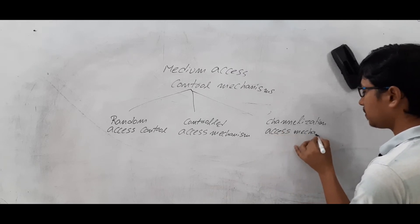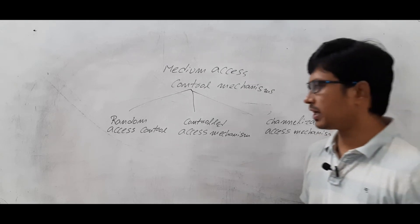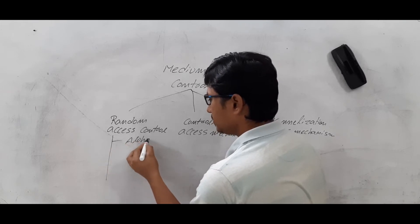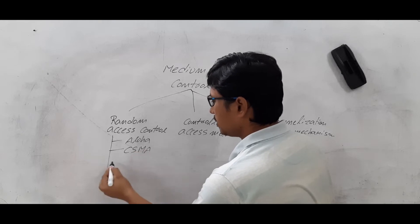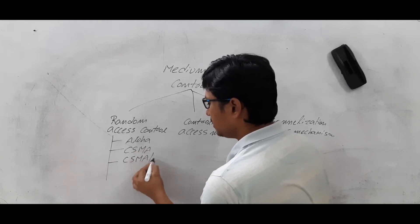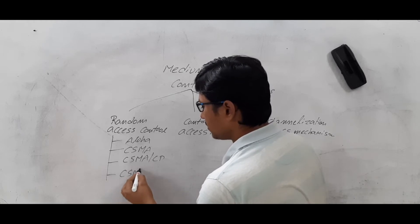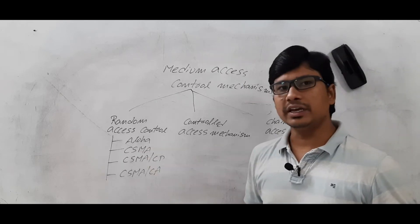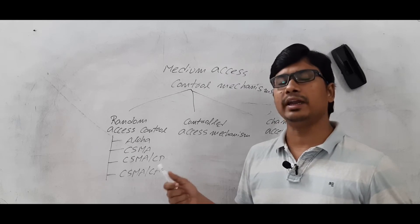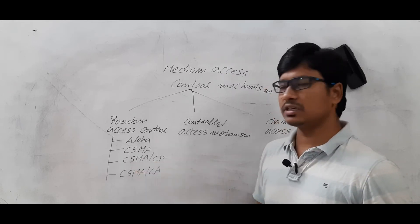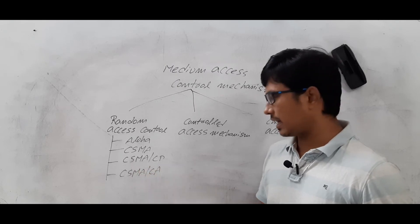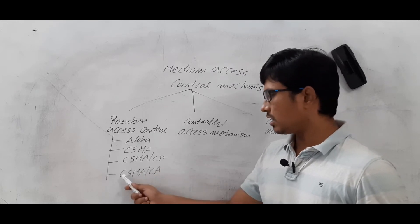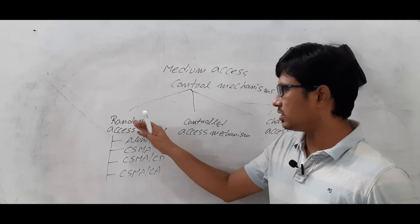Random access control mechanisms are again classified into ALOHA, CSMA, CSMA/CD, and CSMA/CA. ALOHA is further classified into two types: pure ALOHA and slotted ALOHA. CSMA stands for carrier sense multiple access, CSMA/CD is carrier sense multiple access with collision detection, and CSMA/CA is carrier sense multiple access with collision avoidance.